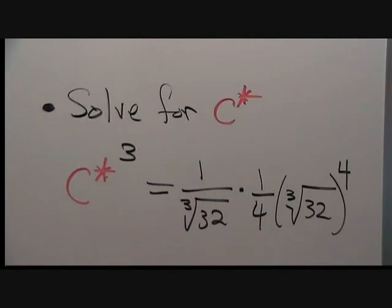To conclude part b, we have to solve for c star such that c star cubed equals 1 over the cube root of 32 times 1 fourth times the cube root of 32 to the fourth power.